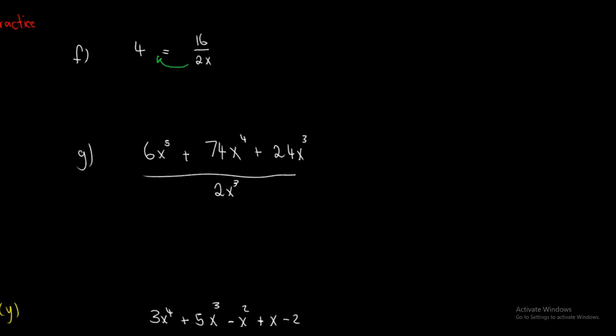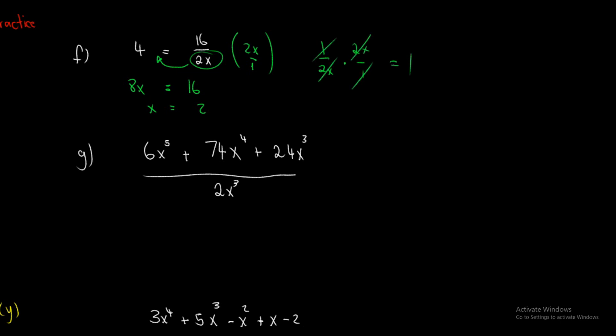All we do is cross multiply. We get 8x is equal to 16. Divide both sides by 8 — that gives me x is equal to 2. You can cross multiply the denominator on the right-hand side to the left-hand side, or you can multiply with the reciprocal — the reciprocal means the opposite. We can multiply by 2x over 1 to create 1. But the shortcut is to cross multiply.